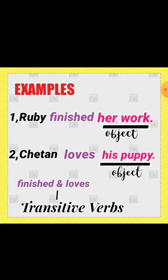Second example: 'Chetan loves his puppy.' To whom does Chetan show love? His puppy. So 'his puppy' is the object, and in this sentence 'loves' is the transitive verb.